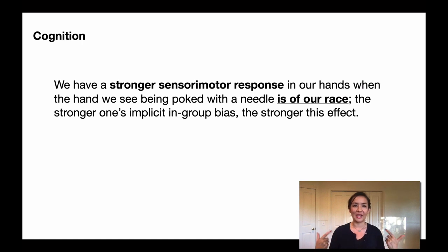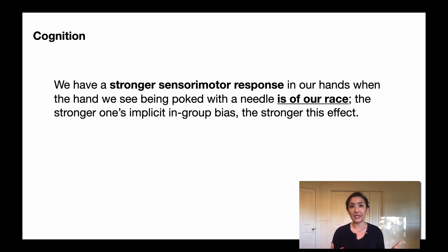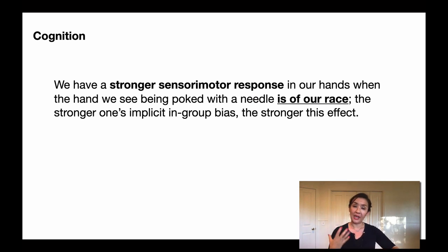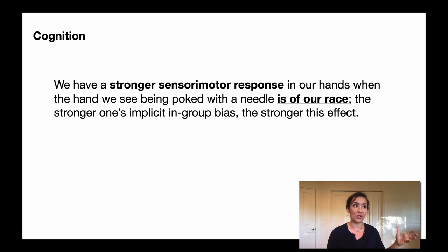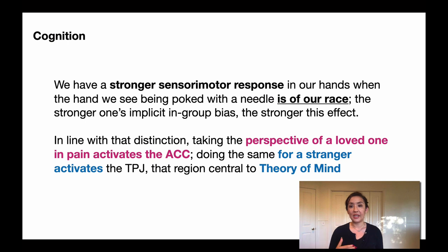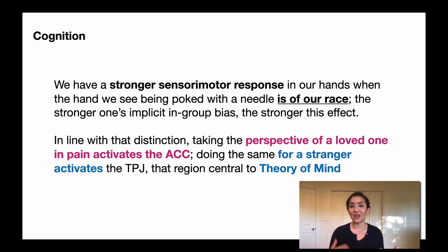Let's look at how some cognitive components also relate. We have a stronger sensorimotor response in our hands when the hands we're seeing being poked by needles are of our own race. Research suggests that when you're shown a video of someone getting poked by a needle, you have a pain response, and that pain response is greater if the hand in the video matches your own race. It's stronger if you have stronger in-group affiliations towards that particular race. Taking the perspective of a loved one activates the pain association with the ACC, whereas doing the same for a stranger actually activates a different part of the brain associated with theory of mind.